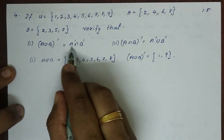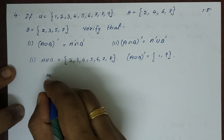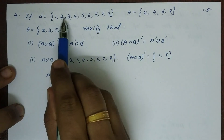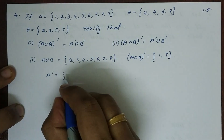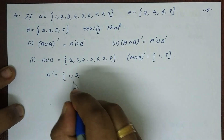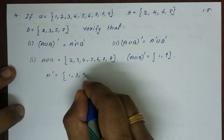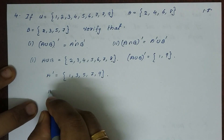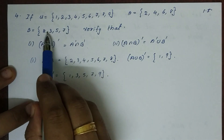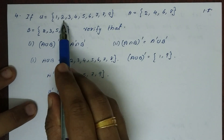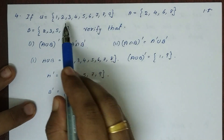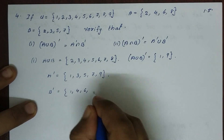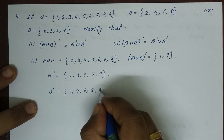Now we take the right-hand side. A complement: A contains even numbers 2, 4, 6, 8, so A complement is the other elements: 1, 3, 5, 7, 9. Then B complement: B is 2, 3, 5, 7, so B complement is 1, 4, 6, 8, 9.